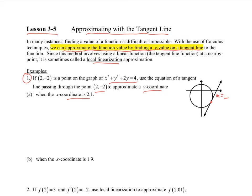Take the derivative of this. We can do it implicitly. 2x + 2y dy/dx + 2 dy/dx = 0. So dy/dx = -2x/(2y + 2).